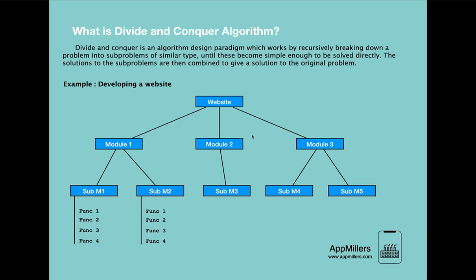At the end, to finish the development of the website we need to combine all models together. By combining the front-end, back-end, and design models together, we fully develop the website. This is how the logic behind divide and conquer algorithms works — we divide the problem into subproblems, solve these subproblems, and combine them together to get the solution to the final problem.